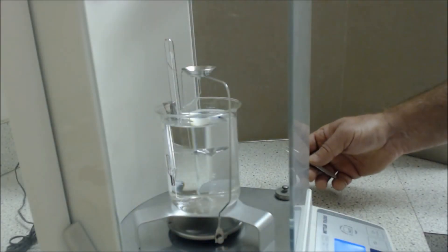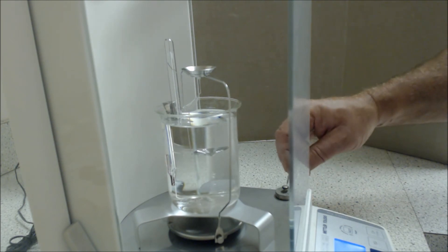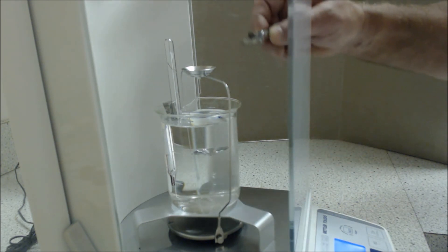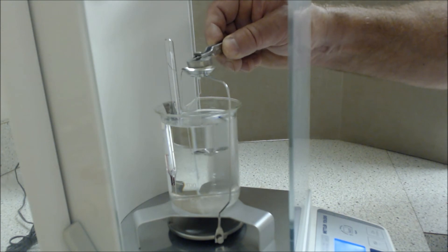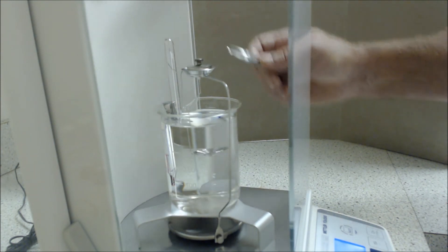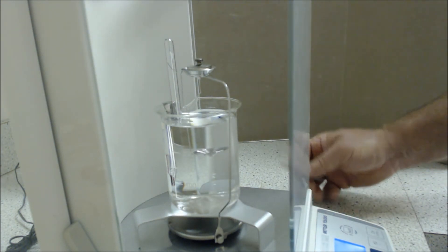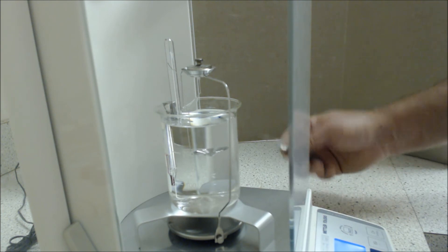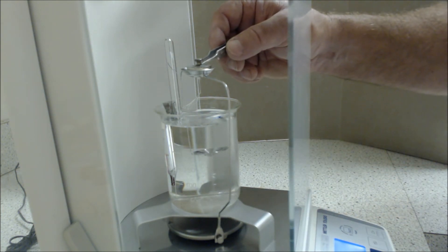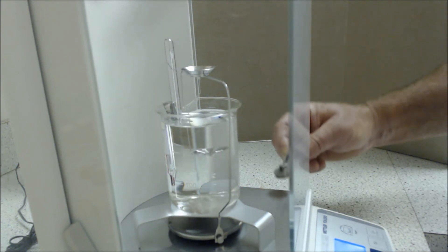This is close-up now of the analytic balance work. First item, what we need to do is do the verification that the balance is acting properly. It's a mass of 20 grams, and we're right on it as far as the verification of the piece of equipment.